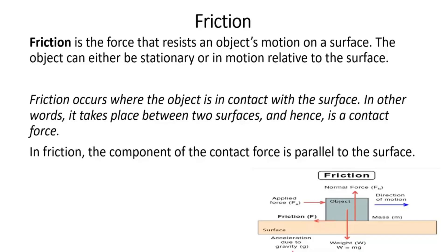I recall us talking about how normal force is when the object is not just on a flat surface and it's perpendicular to the contact. But for friction, friction is a force that resists an object's motion on a surface. The object can either be stationary or in motion relative to the surface. Friction occurs when the object is in contact with the surface.